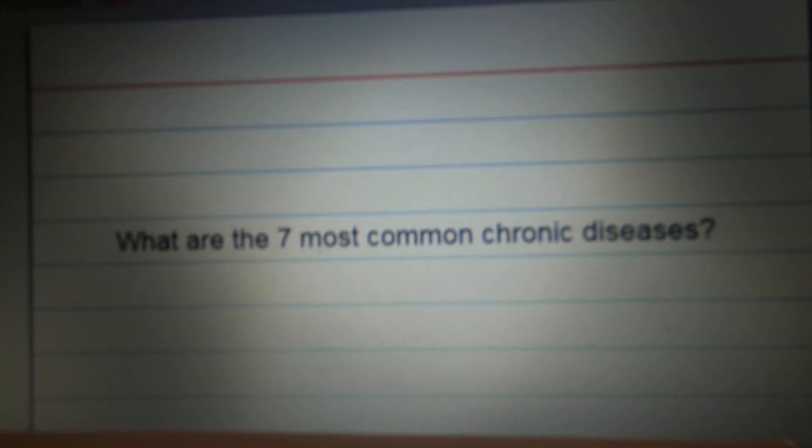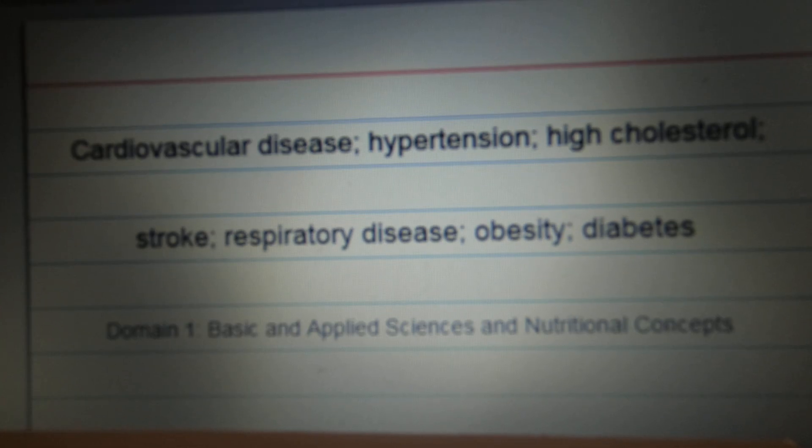What are the 7 most chronic diseases? Cardiovascular disease, hypertension, high cholesterol, stroke, respiratory disease, obesity, and diabetes.